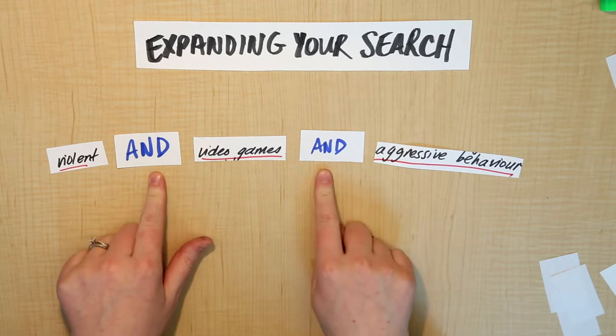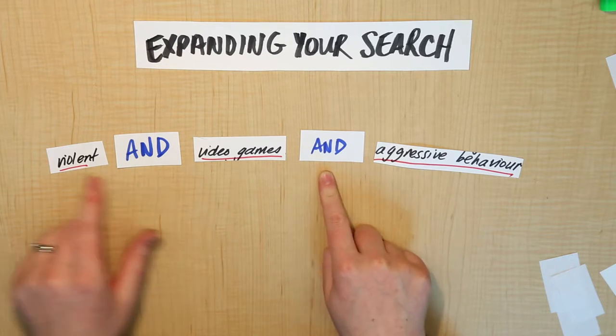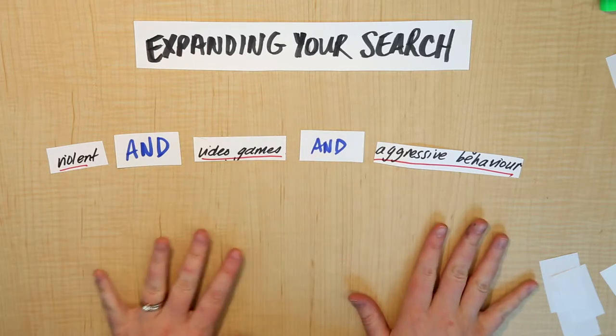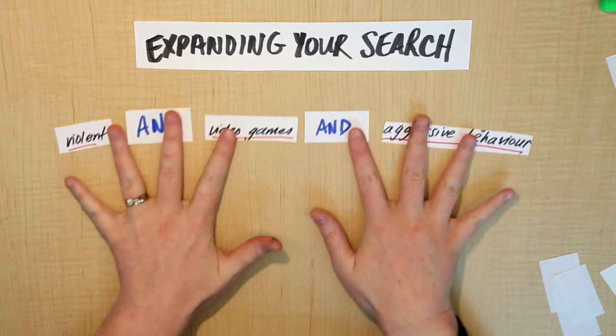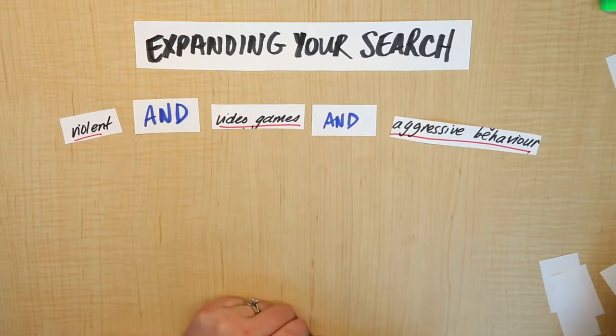So using the word AND to connect them tells the database you need all three of these to be present in your results for them to be considered relevant. That's the first strategy we're going to use: the word AND.